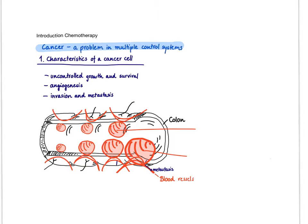Another feature of a cancer cell is angiogenesis. Always when you proliferate, you need to provide nutrients and oxygen, so there needs to be growth of a blood vessel to support tumor growth. The last and most deadly trick of the cancer is invasion and metastasis. A cancer cell has the ability to intermingle with and destroy adjacent tissues, and further, to travel via the bloodstream somewhere else and settle there, where the whole story starts from scratch.